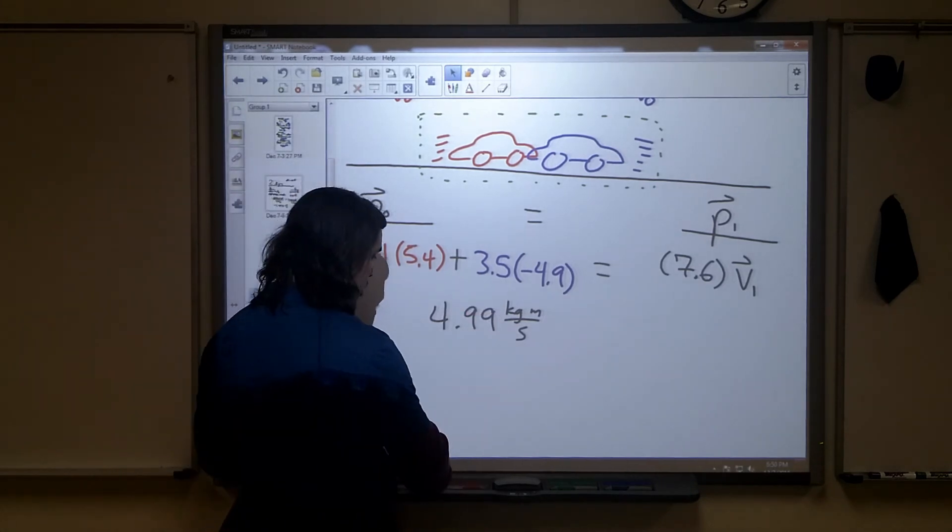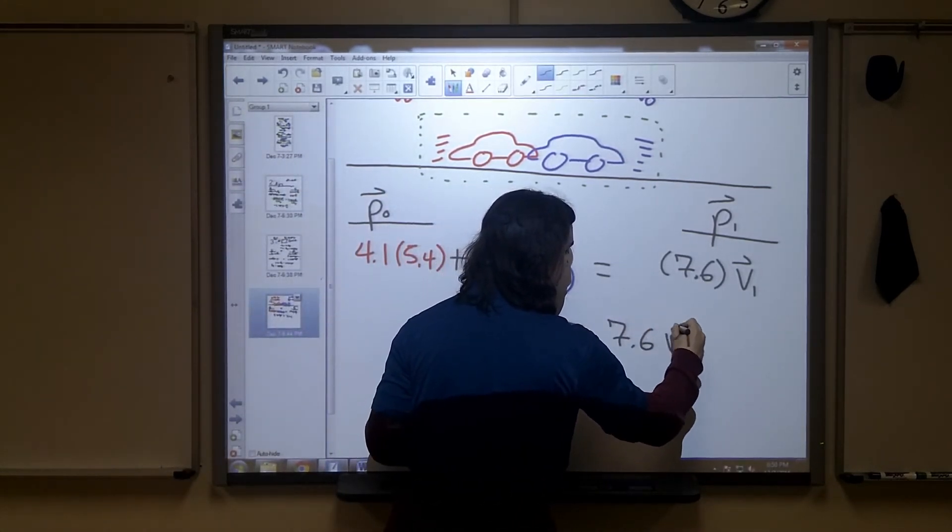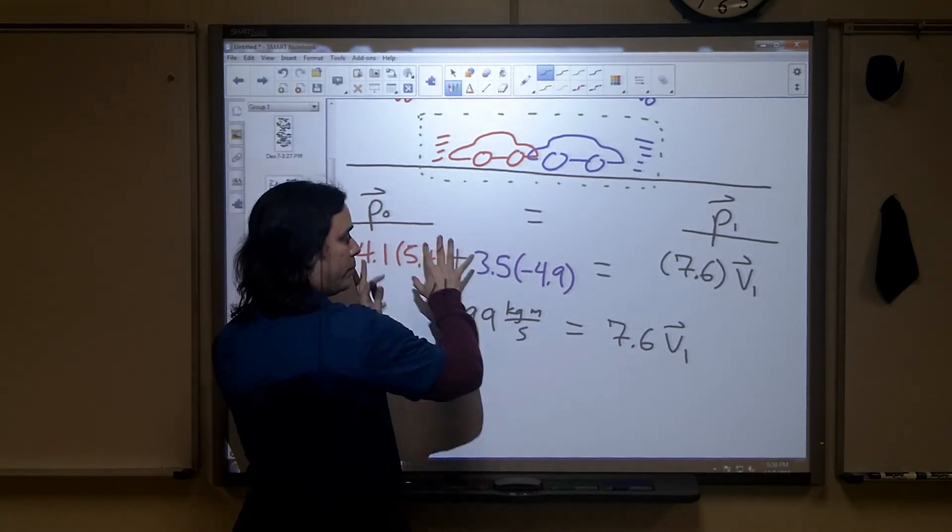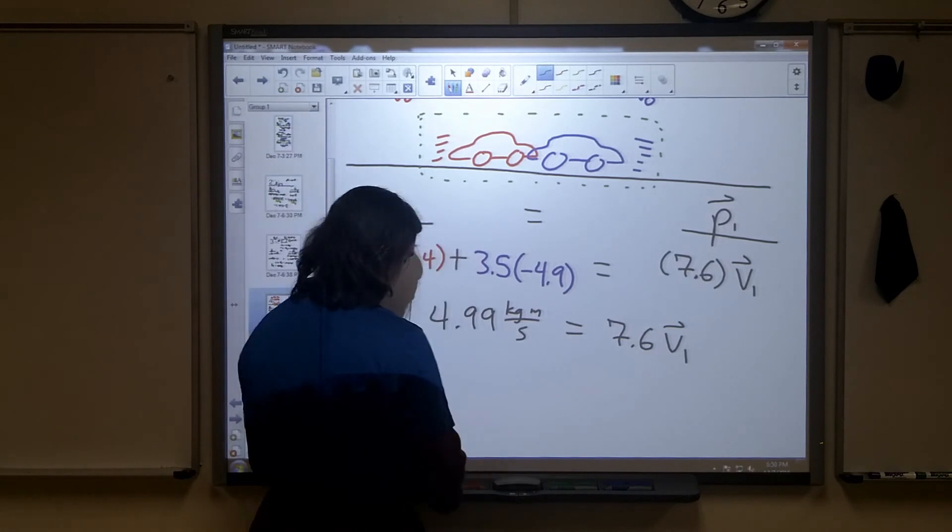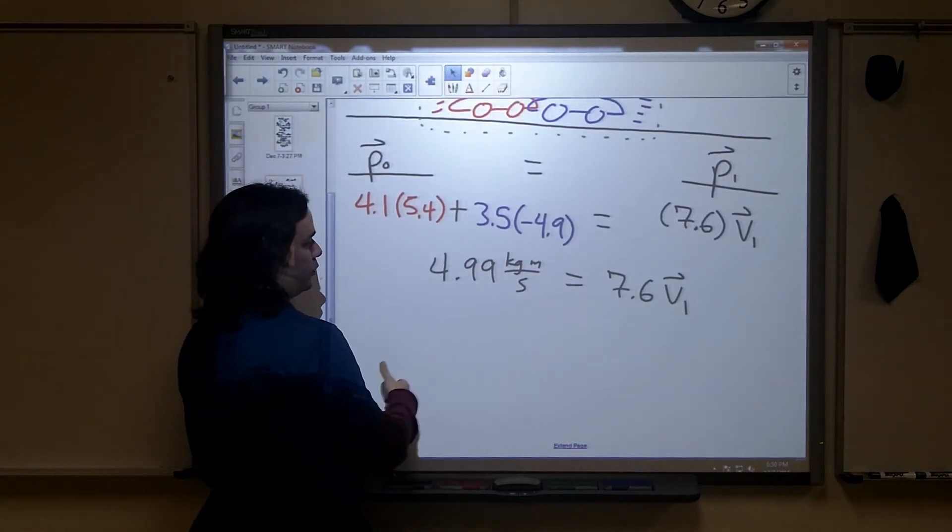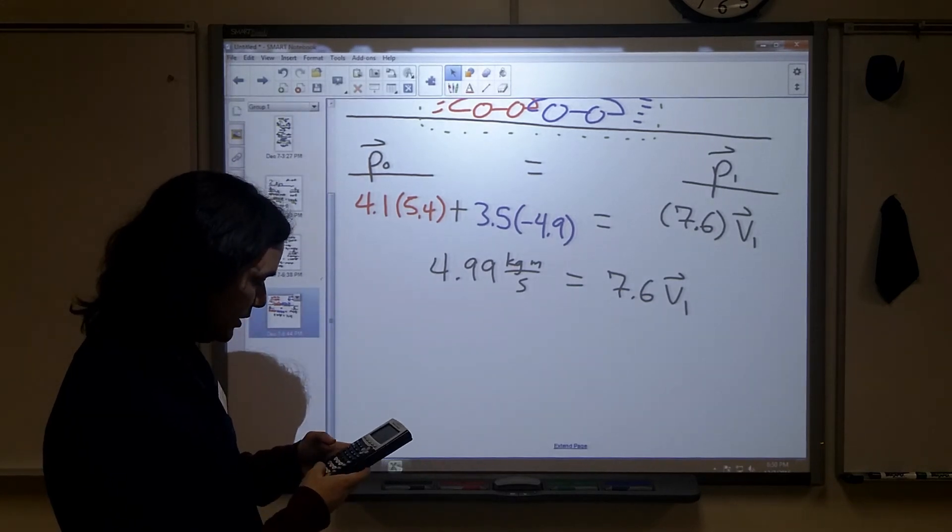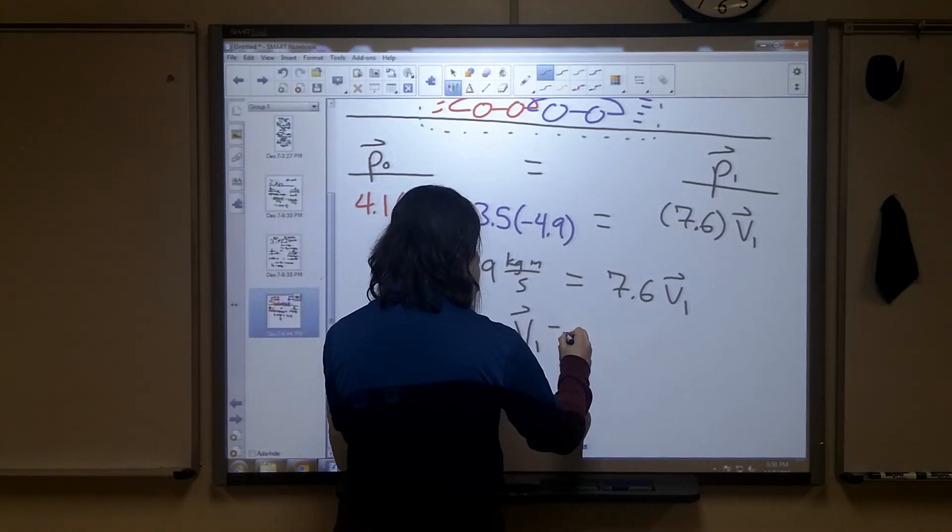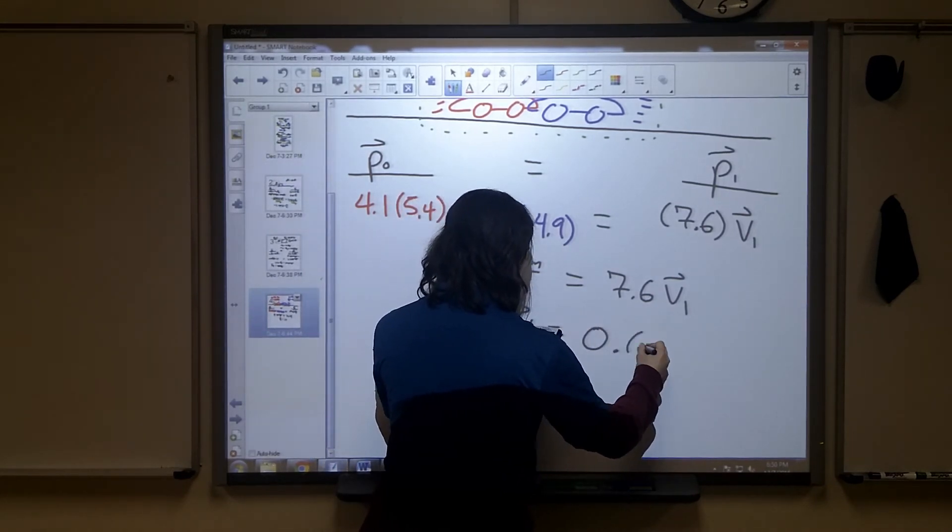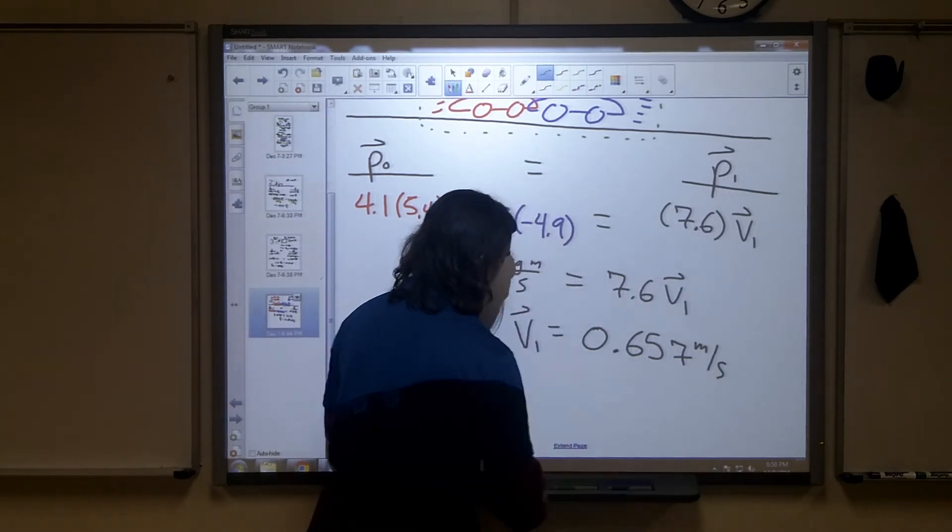This is what I started with. It must be equal to what I end with if my momentum is conserved. This is the momentum. Conserved means what you start with, you end with. And so, since we have no significant external forces, we can now solve for our final velocity. We take 4.99 divided by 7.6, and we find that the final velocity will be equal to 0.657 meters per second.